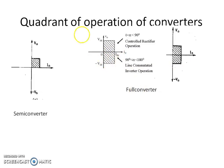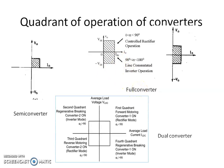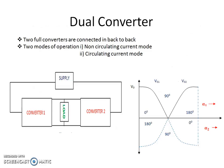If we want all four quadrants of operation — first, second, third, and fourth — we can employ two full converters connected back to back. If we employ two full converters back to back across the load, we can obtain all four quadrants of operation. That type of converter is known as a dual converter. A dual converter is nothing but two full converters connected back to back across the load.